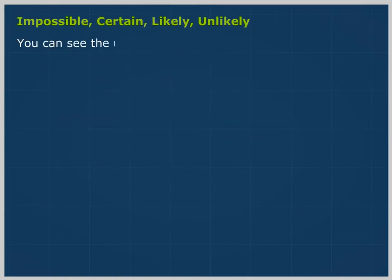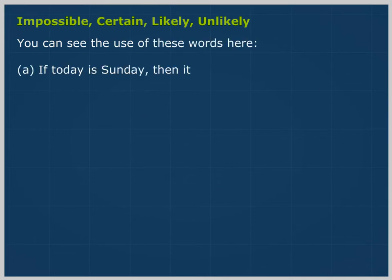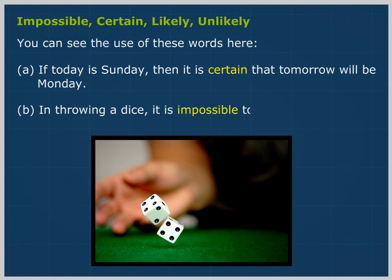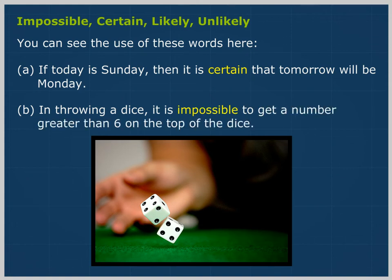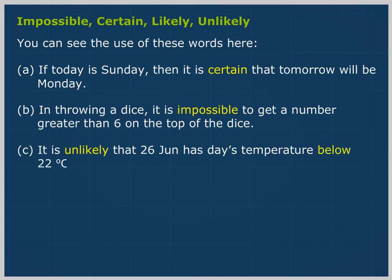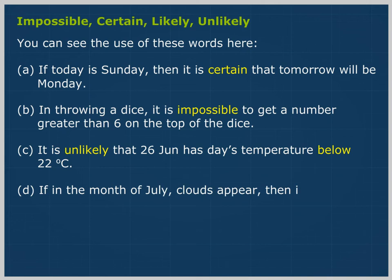You can see the use of these words here. If today is Sunday, then it is certain that tomorrow will be Monday. In throwing a dice, it is impossible to get a number greater than 6 on the top of the dice. It is unlikely that 26th June has a day's temperature below 22 degrees Celsius. If in the month of July clouds appear, then it is likely that there will be rain.